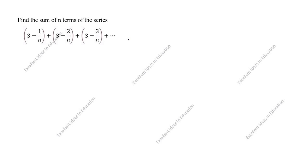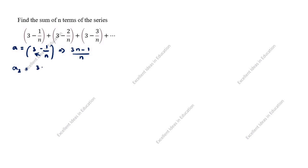The first term a is equal to (3 - 1/n). Simplifying by cross-multiplying, a = (3n - 1)/n. The second term a2 is equal to (3 - 2/n), which simplifies to (3n - 2)/n.